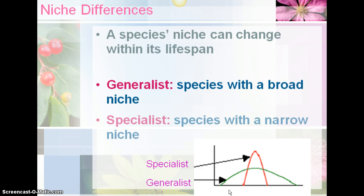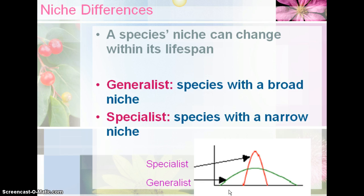We have two niche differences: the generalist and the specialist. The generalist is a species with a broad niche — they're laid-back, taking what they get and going with it. The specialist has a narrow niche, so their tolerance range is very small compared to a generalist. The generalist can survive in whatever conditions you give them, while the specialist is really narrow in the conditions they're able to survive in. So the generalist would be able to survive better in a changing environment compared to a specialist.